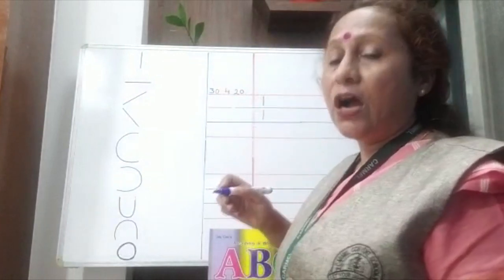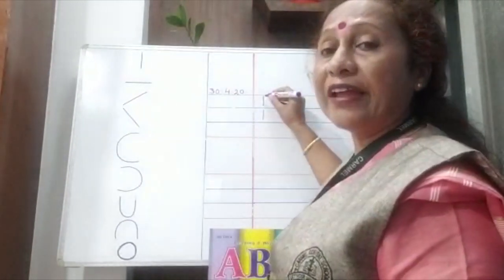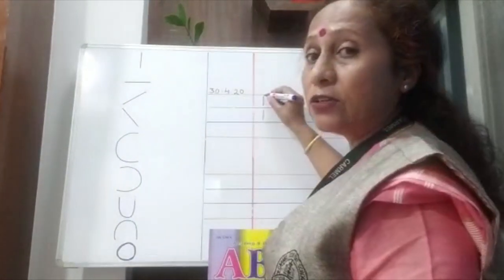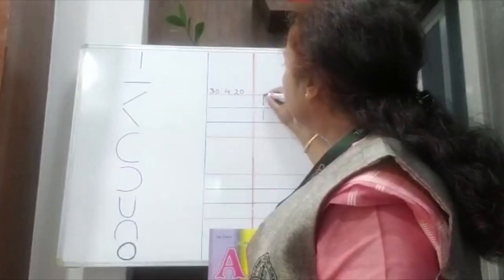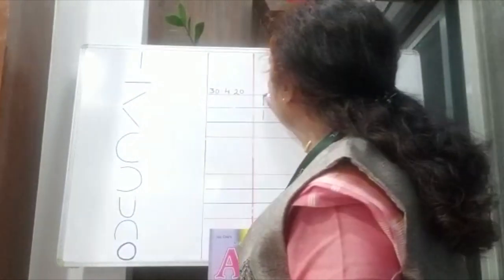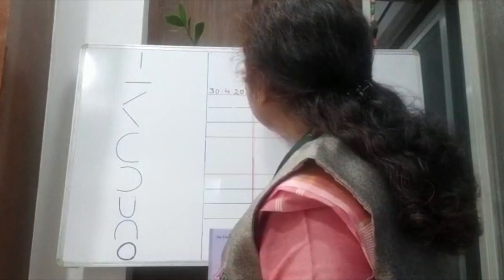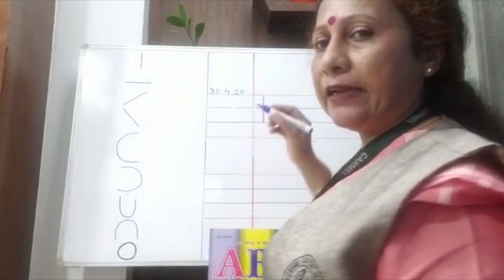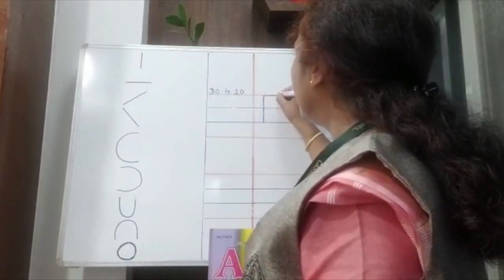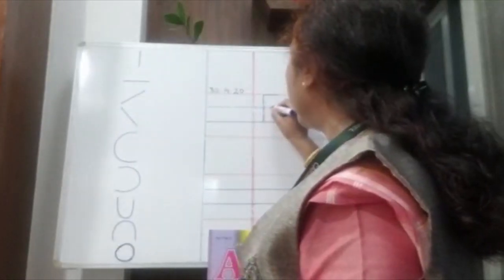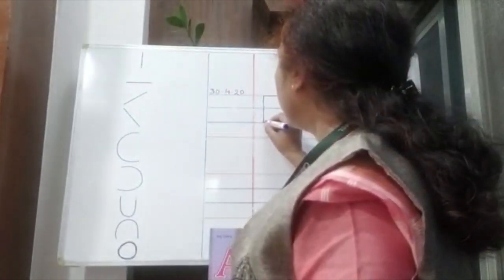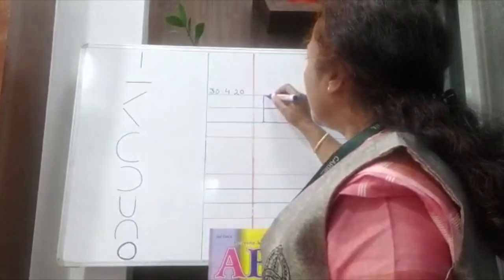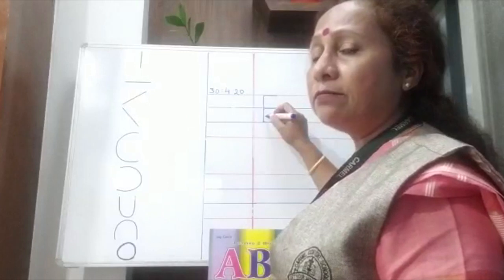The first character is E. How to write E? First, put your pencil on the red line. We will start our letter from the red line. From red line to the second blue line, you have to make one standing line. And then make three sleeping lines: the first sleeping line is on the red line, the second sleeping line is on the first blue line, and the third sleeping line is on the third blue line. In this way, you have to make E.